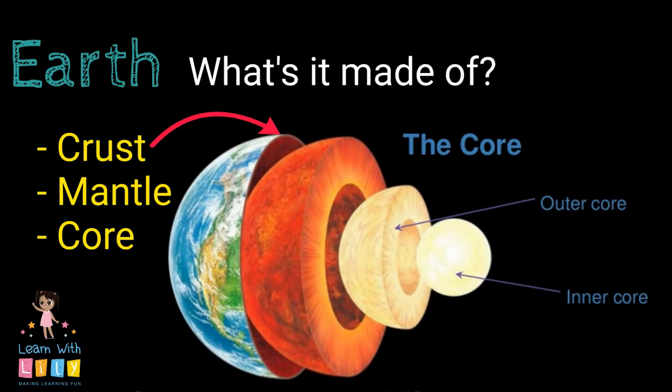The crust is the outside, where we stand and build things on. It's the thinnest of layers. Yes, and the mantle is the middle layer. It's made of both solid and liquid melted rock. It's about 1,800 miles thick and makes up about 85% of Earth's weight. Wow.